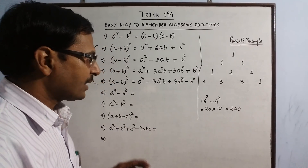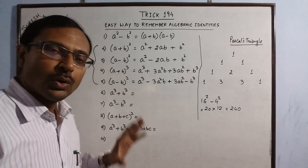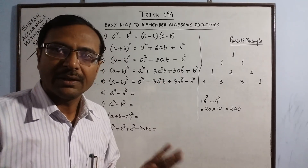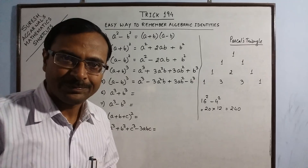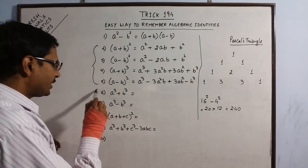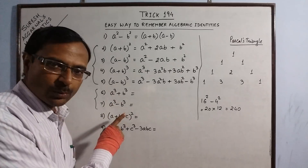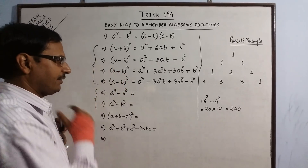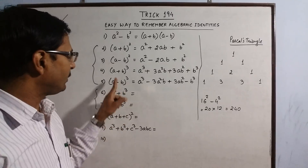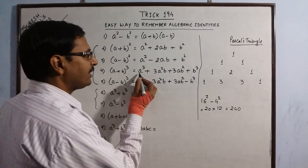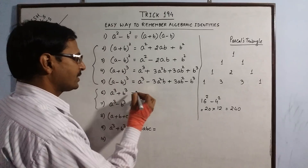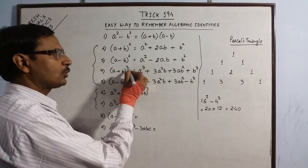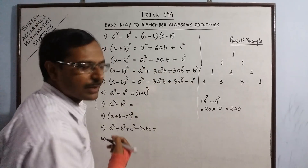At class 9th and 10th level students tend to forget the cube identities, but the method is quite simple. Now coming to the pair of identities A cube plus B cube and A cube minus B cube. These two identities can actually be derived from identities 4 and 5. For deriving A cube plus B cube, we make use of A plus B whole cube — bringing two terms to the LHS gives us the identity of A cube plus B cube.